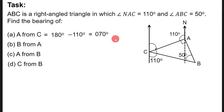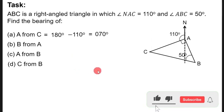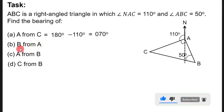According to our previous lesson on bearings, we always report bearings in three figures. So the answer is written as 070, which is actually 70 degrees. Now let's find part (b): the bearing of B from A.